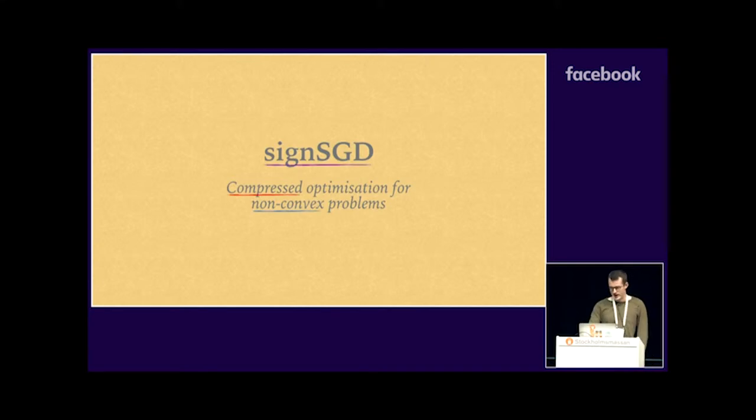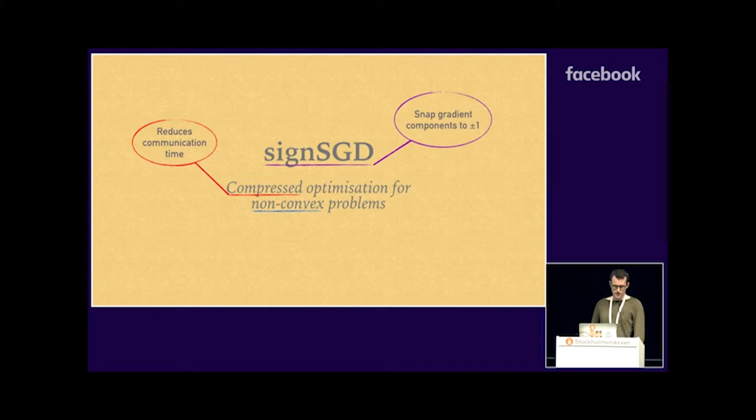SignSGD is an algorithm which just takes the sign of the stochastic gradient, sets the gradient components to plus or minus one. It's compressed, which can reduce communication time in distributed learning. And we study non-convex problems because they're the realistic ones for deep learning.